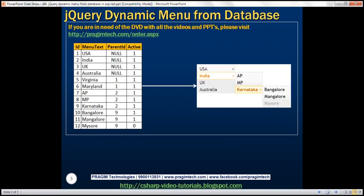So here is what we want to achieve. Using this data from this database table, we want to build this menu. If you look at the table, we've got four columns. The first column is ID, the second column is the menu text — this is the text that will appear on our menu. And the parent ID column is very important; this is what establishes the relationship between these menu items.